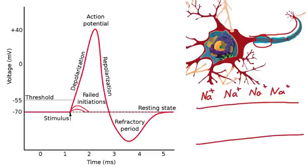Now let's look over here. Here we have a stimulus that's happening, and you can see there's a first stimulus that does not reach threshold, so nothing happens. Another stimulus comes and it does not reach threshold, so we still do not get an action potential.